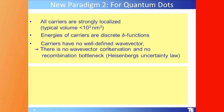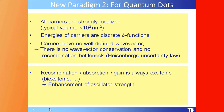Following Heisenberg's uncertainty principle, carriers have no well-defined wave vector — there is no wave vector conservation and no recombination bottleneck, going back to Heisenberg's 1926 uncertainty law. Recombination due to strong localization is always excitonic or biexcitonic; there is no free-carrier recombination, and that automatically leads to an enhancement of oscillator strength.